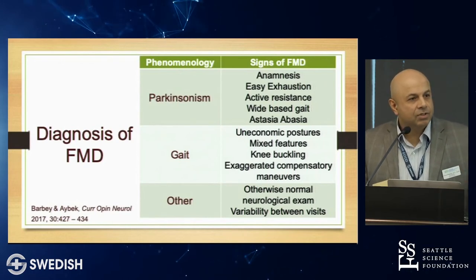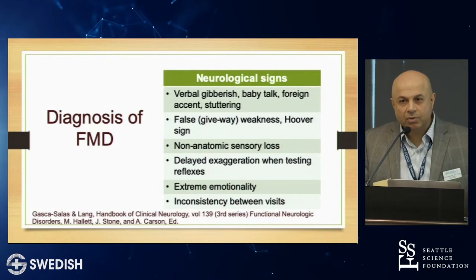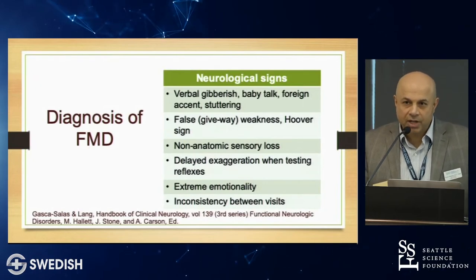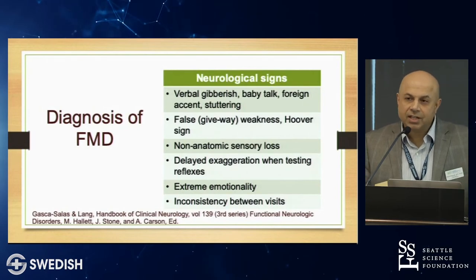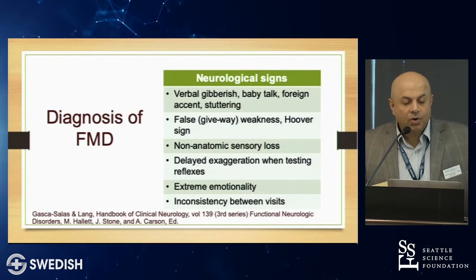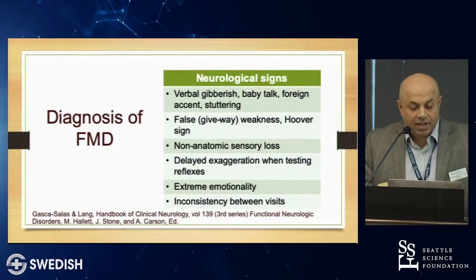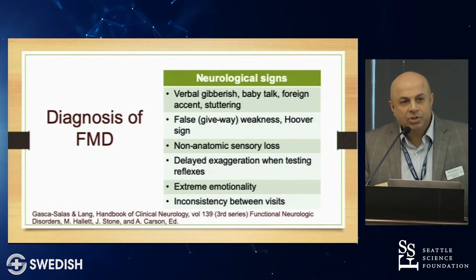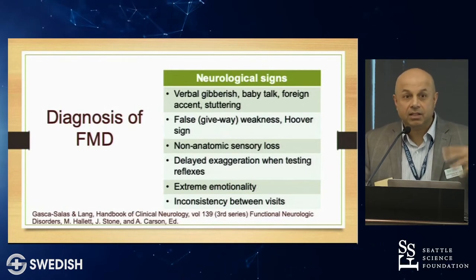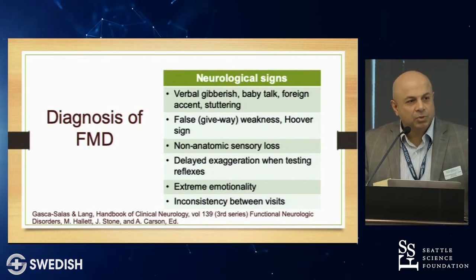Varying phenomenology between visits is important — if you had dystonia and myoclonus at the first visit and ataxia and tremor at the next, how is that possible? Other neurological signs can also occur: stuttering, baby talk, give-way weakness, the Hoover sign for false weakness, delayed exaggeration of reflexes, extreme emotionality with simple tasks, and inconsistency between visits.